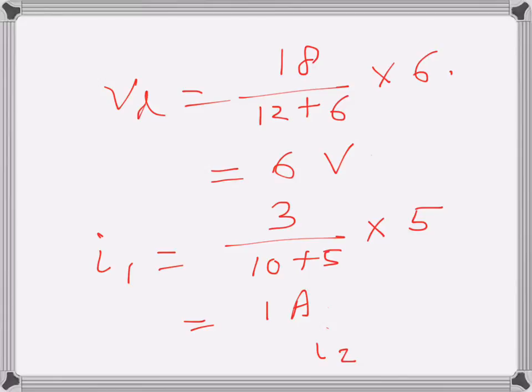And i2 will be of course 3 minus 1, that is 2 amperes. Or we could have applied current divider rule, then I would multiply by—so that would be 3 over 5 plus 10, and since I'm trying to find the current through the 5 ohm resistance I will multiply by 10, which is i2, so that would become 2 amperes.